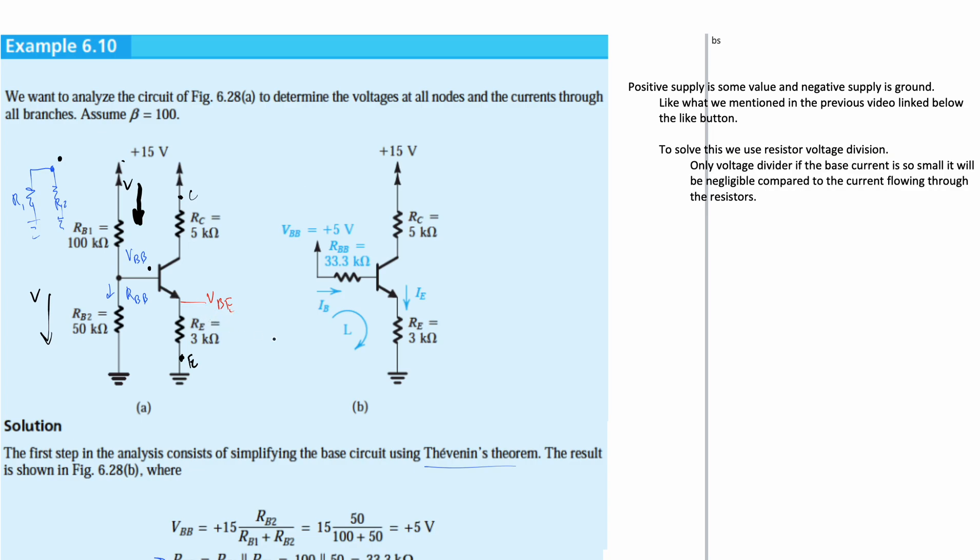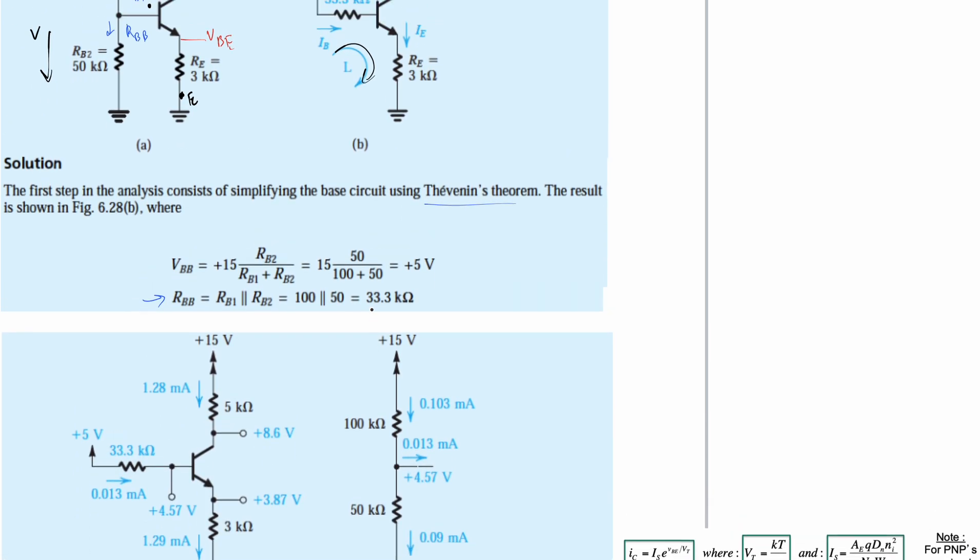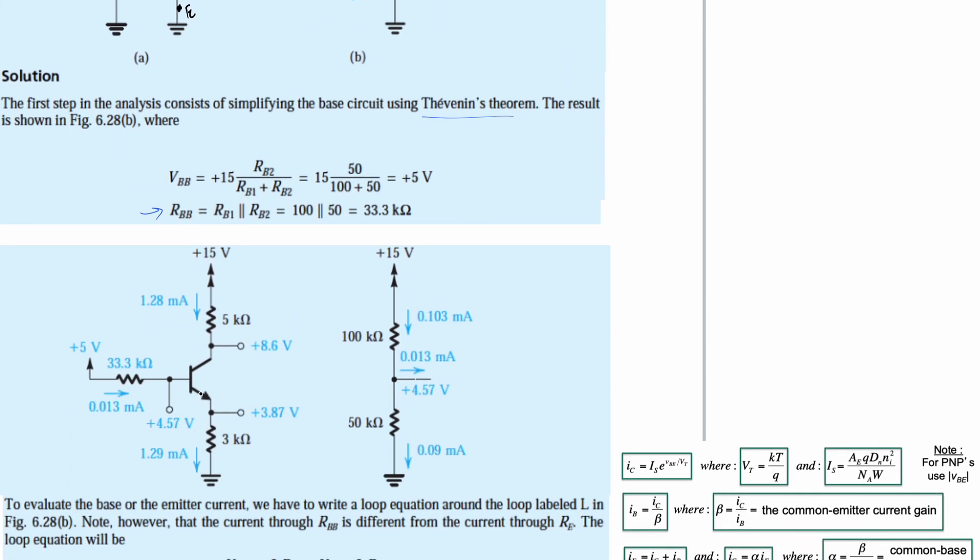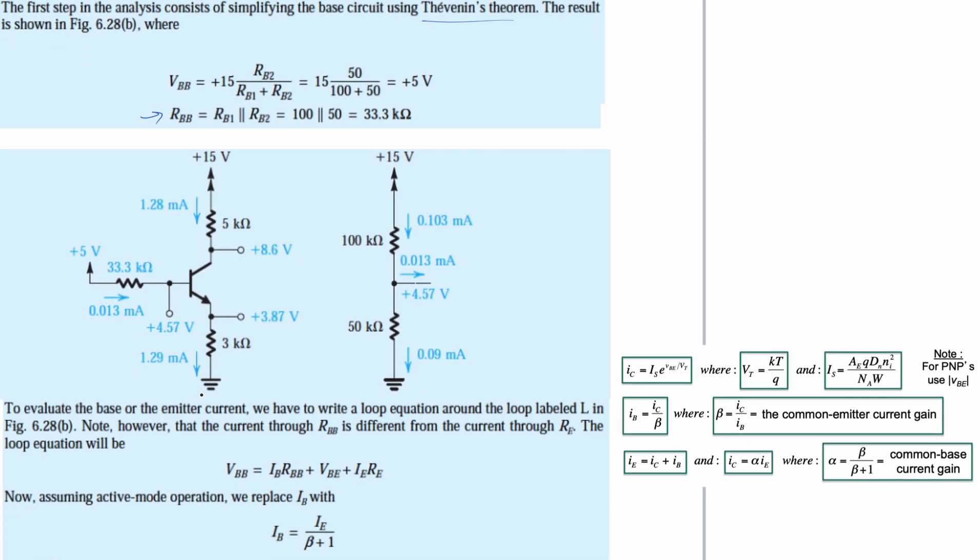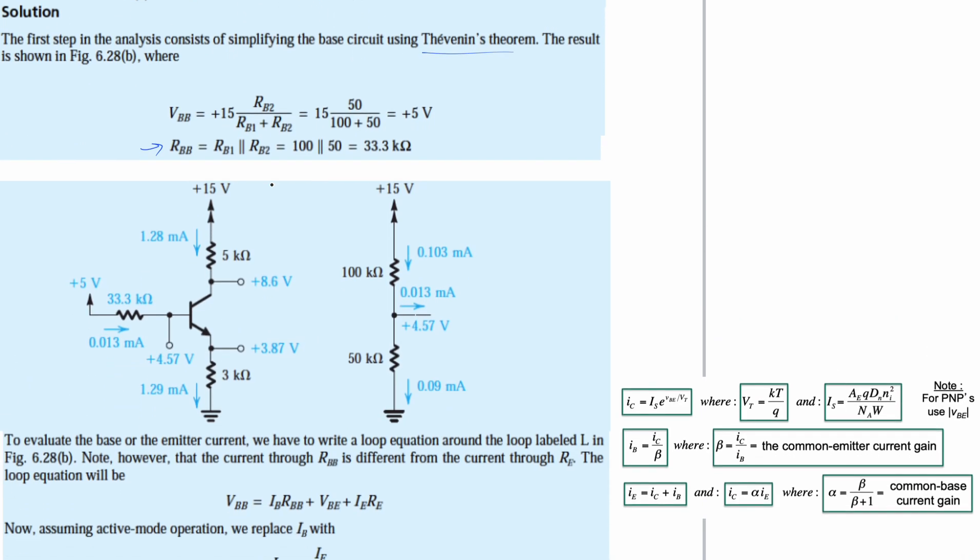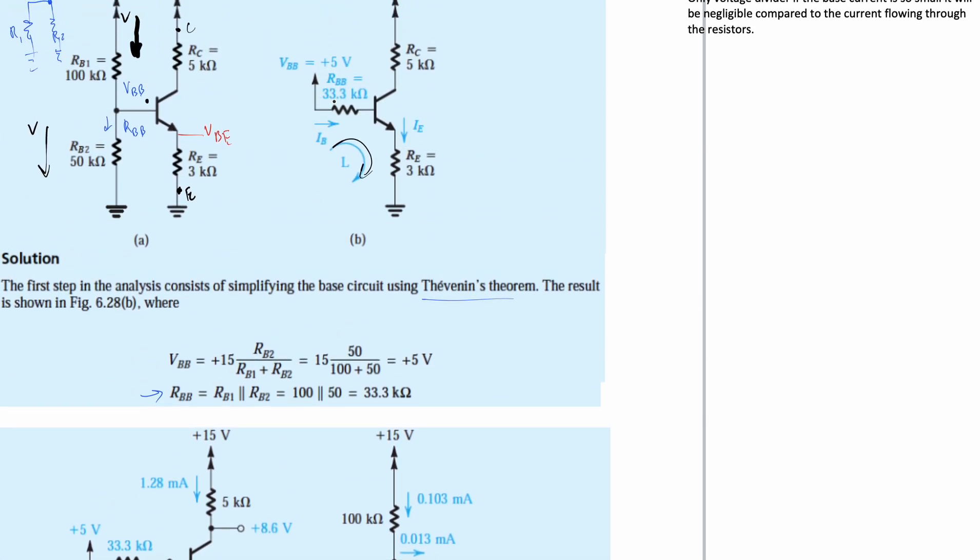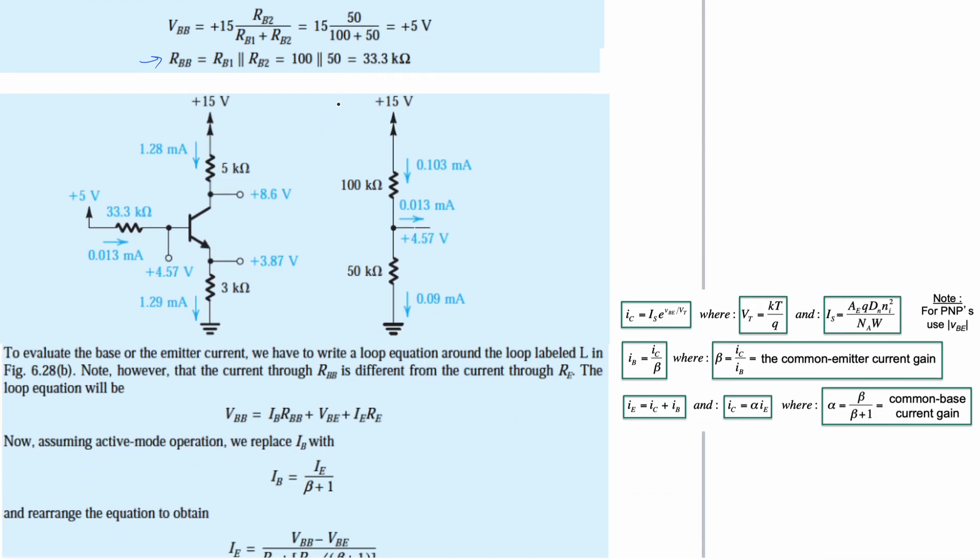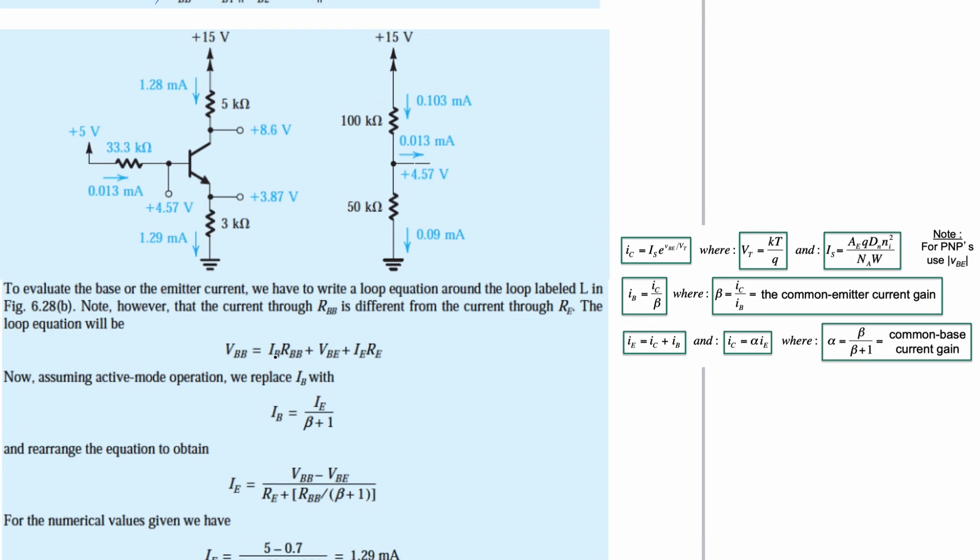And so if we want to find the emitter, we're going to have to find the current through this part, which is what this is. So we're going to come down here and we're going to do that. Now the figure is basically the same, we're just rewriting it with some values that we are going to find. So the first thing that we can find is the base, right, our VBB. And that is because we have our IB and our RBB. It's going to be the values that we just found, the 33.3 kilo ohms, and then our voltage, which is the five volts there, and then the current, which we don't know.